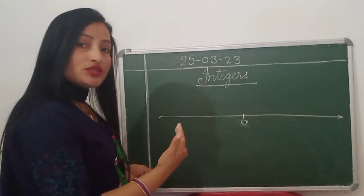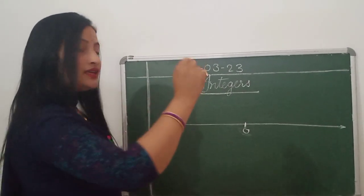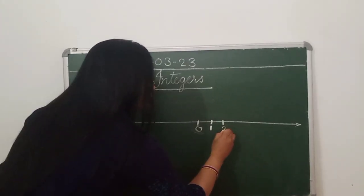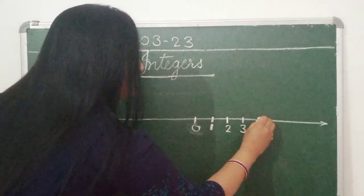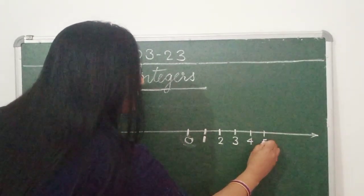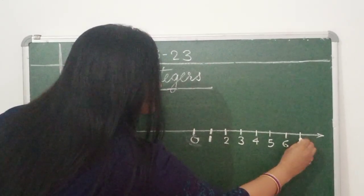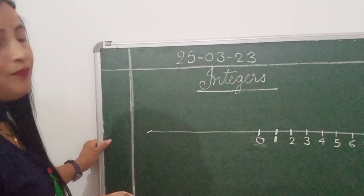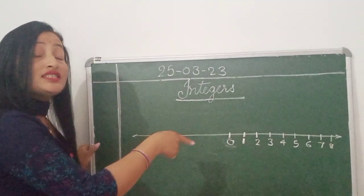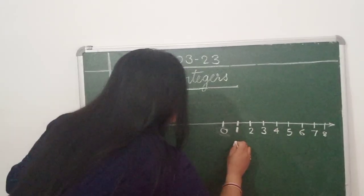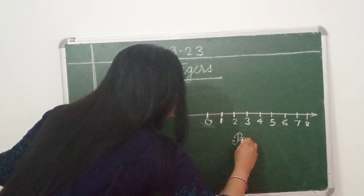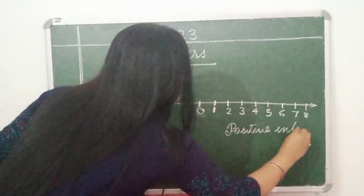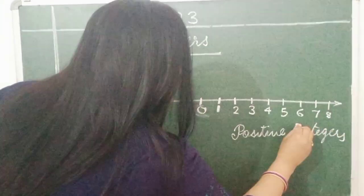Now when we move to the right hand side, we get the positive integers. This is my right hand. And now I am going to write 1, 2, 3, 4, 5, 6, 7, 8 — like this, infinite. These are positive integers.